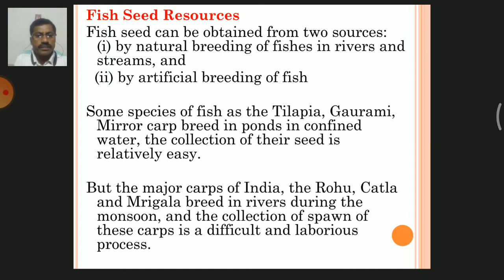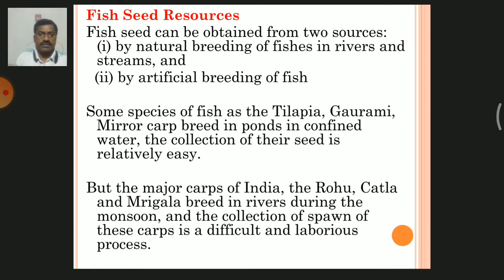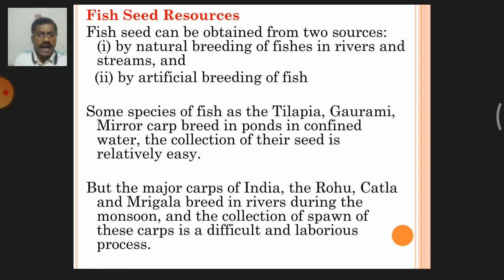Some species of fish such as tilapia, gourami, and mirror carp breed in ponds — in confined water — so the collection of their seed is relatively easy. But the major carps of India — rohu, katla, and mrigal — breed in rivers during the monsoon, and the collection of spawn of these species is a difficult and laborious process.